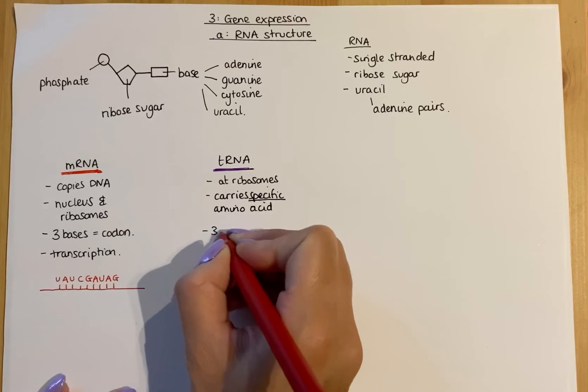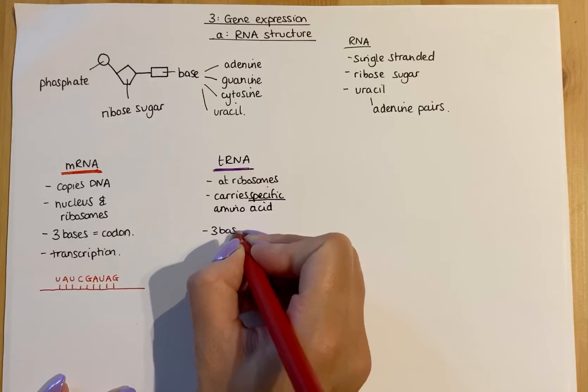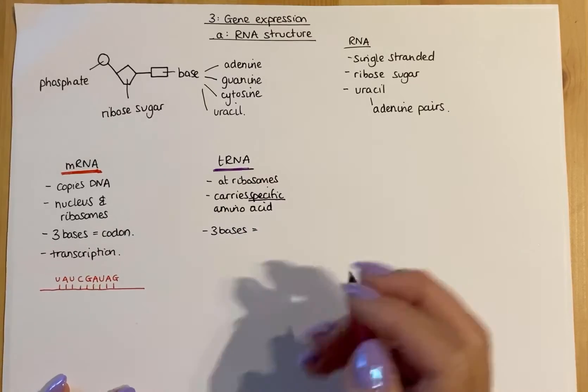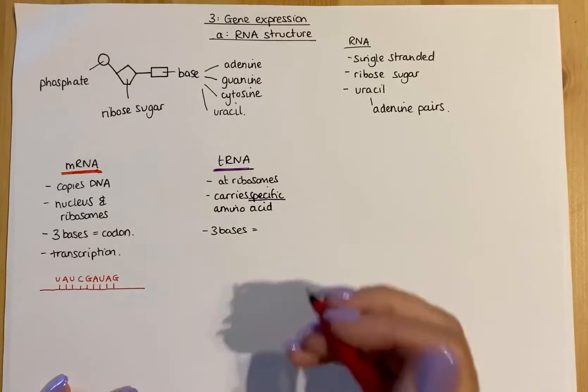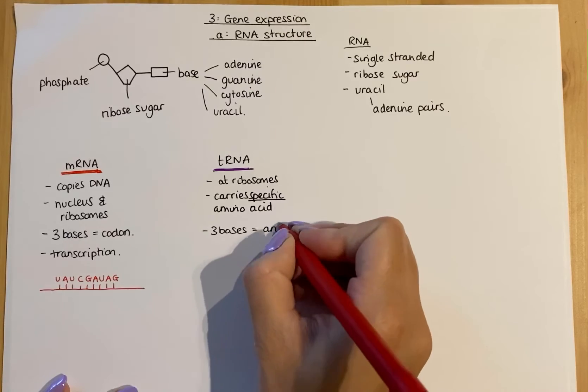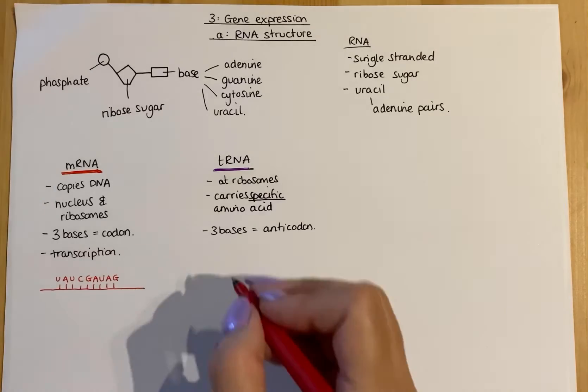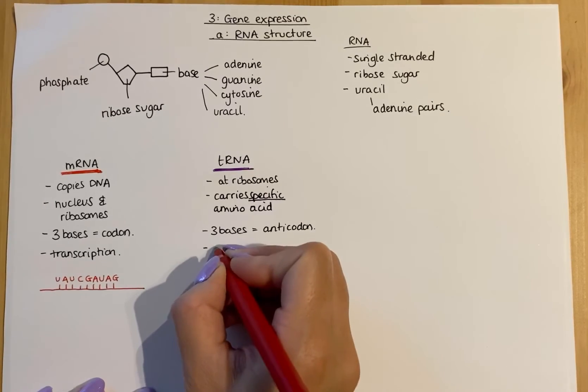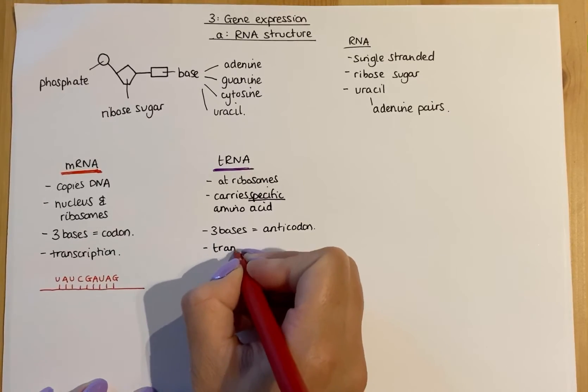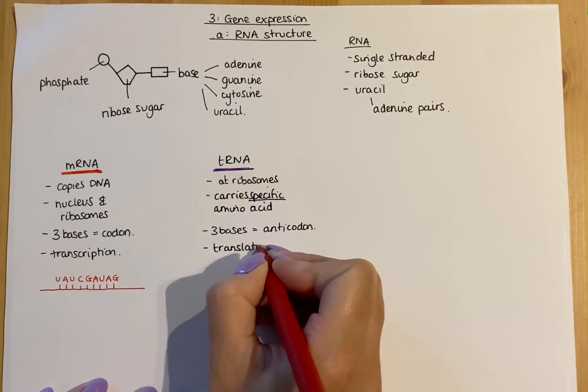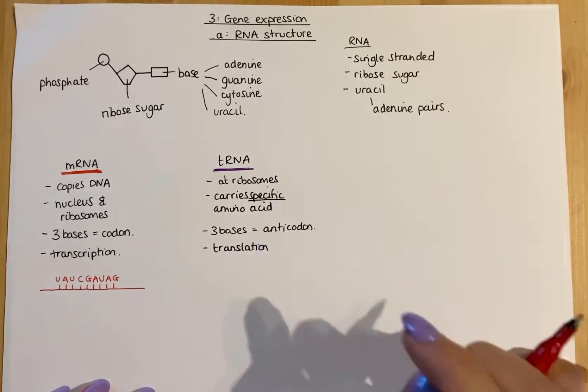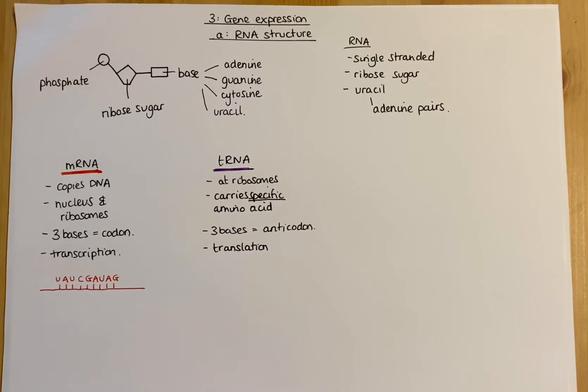In terms of the three bases on tRNA, rather than being called a codon like on mRNA, we call these anti-codons. tRNA is involved in what's called translation, which occurs at the ribosomes. In the next video we're going to talk a lot more about that.